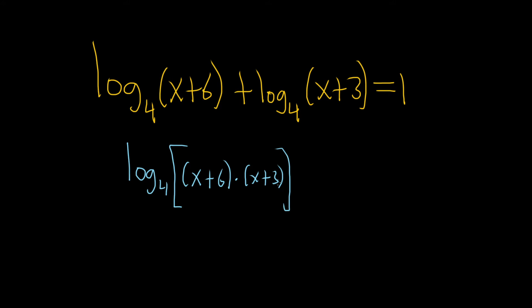And then this here is equal to 1. The rule here basically says if you have the log base b of x plus the log base b of y, that's equal to the log base b of x times y. So the addition turns into multiplication.